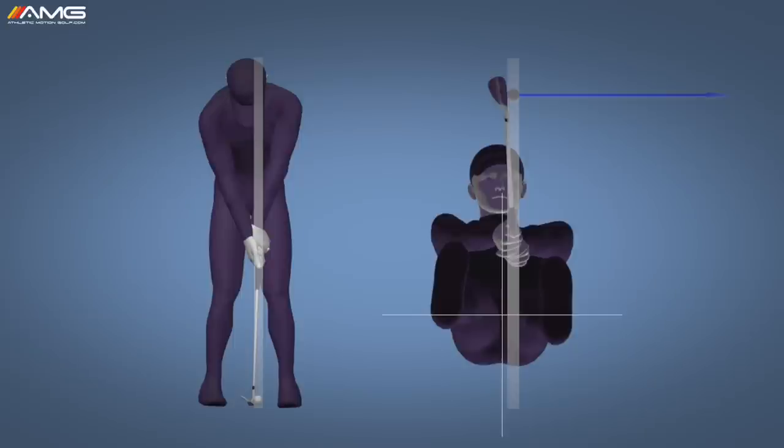The ball is forward of center, but it's not too forward. It's gradually worked itself back from the driver, but now the back of the ball is where our seven iron was at impact. So we can see that left eye right over the back of the ball.